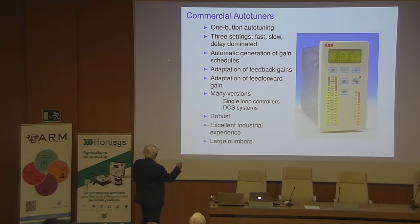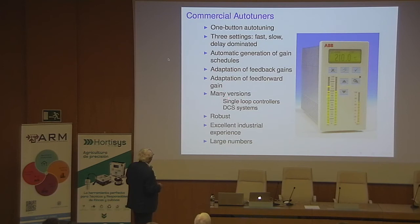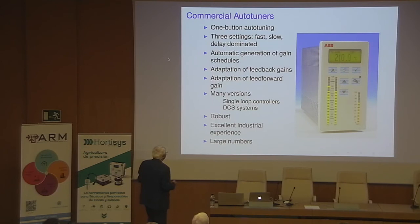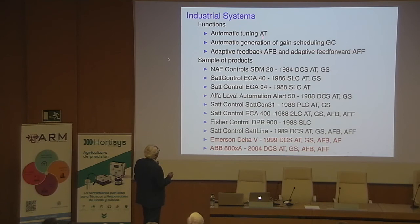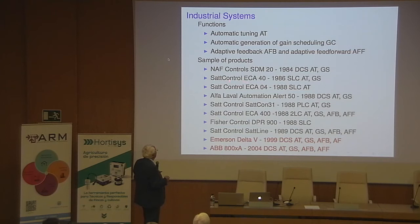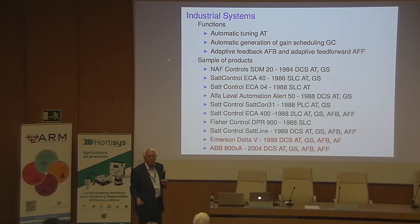There are a lot of commercial developments. The idea of one button to push for tuning — in earlier ones we had three settings: fast, slow, and delay-dominated. You can also generate gain schedules automatically. There are many versions: single-loop controllers, DCS controllers — they are robust and there is very good industrial experience. The auto-tuner functions include automatic tuning, gain scheduling, adaptive feedback, and feedforward. These are now standard features in both ABB and Emerson systems.